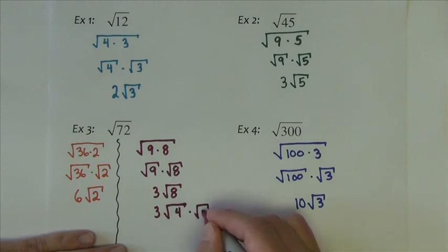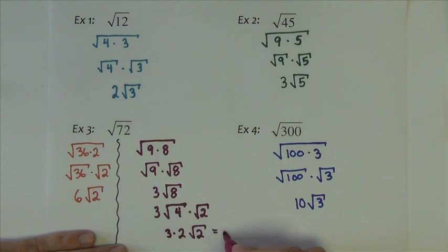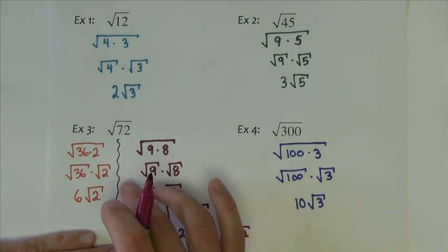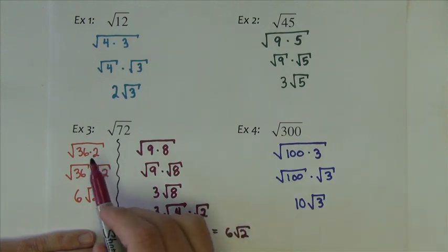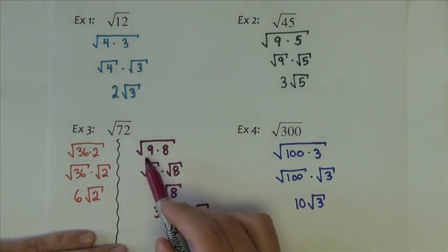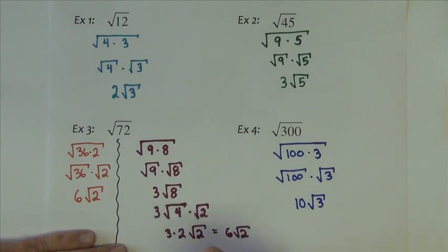8 is 4 times 2. The 4 becomes 2. So I have 3 times 2 square root of 2, which becomes 6 square root of 2. And then we get the same thing. But we can see that this technique, I needed repeated steps of finding perfect squares to square root. So if you don't find the largest one, like over here I found 36. If you find smaller perfect squares, it's okay. Sometimes you just have to keep on going.